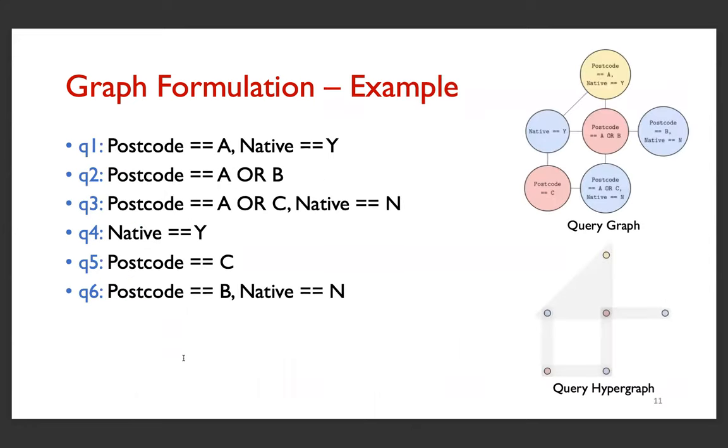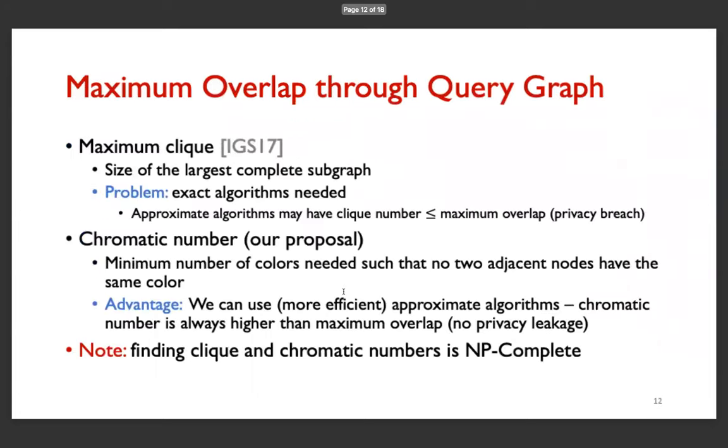Here's an example of the query graph formulation. We are given six queries here. On the top here, we have the query graph, and at the bottom, we have a hypergraph. The three queries here have a joint coverage that is not empty, and this is indicated by this hyperedge shaded in gray.